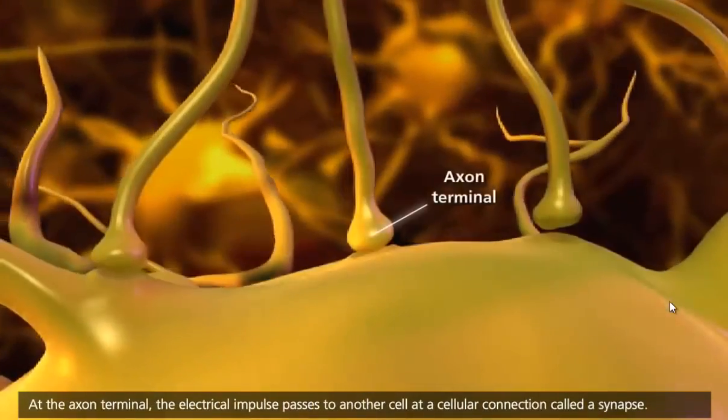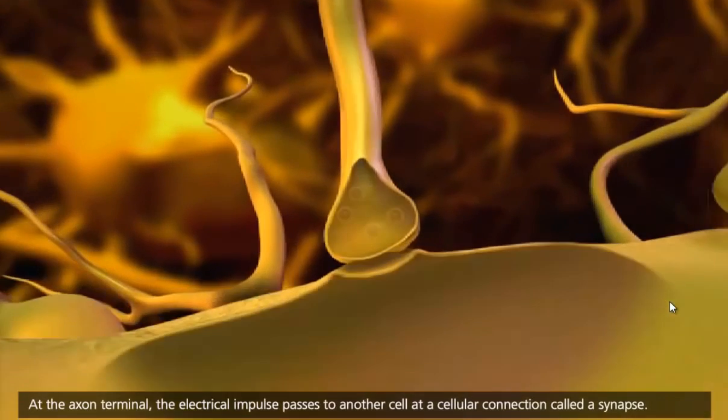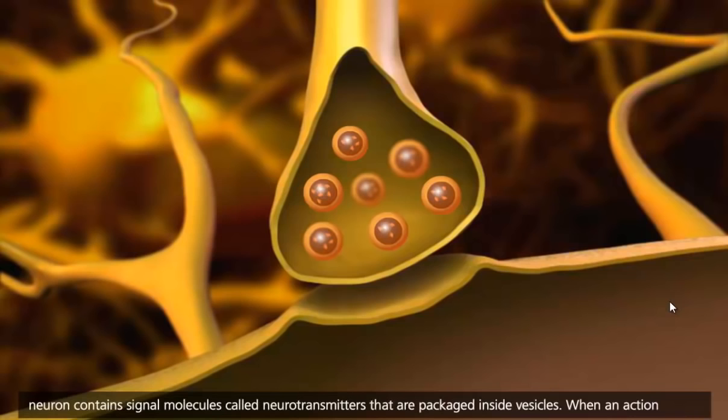At the axon terminal, the electrical impulse passes to another cell at a cellular connection called a synapse. The space between the presynaptic neuron and a postsynaptic cell is called the synaptic cleft. The presynaptic neuron contains signal molecules called neurotransmitters that are packaged inside vesicles.